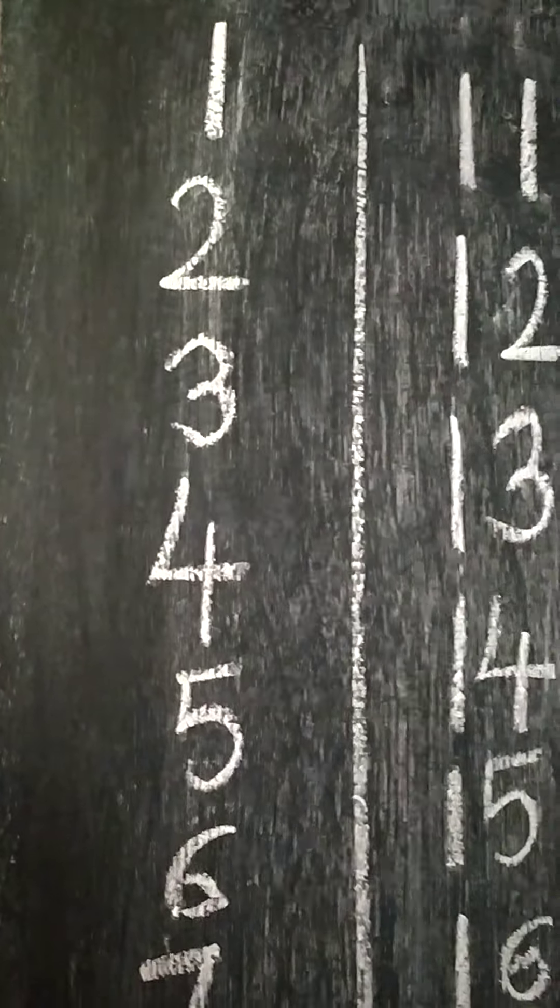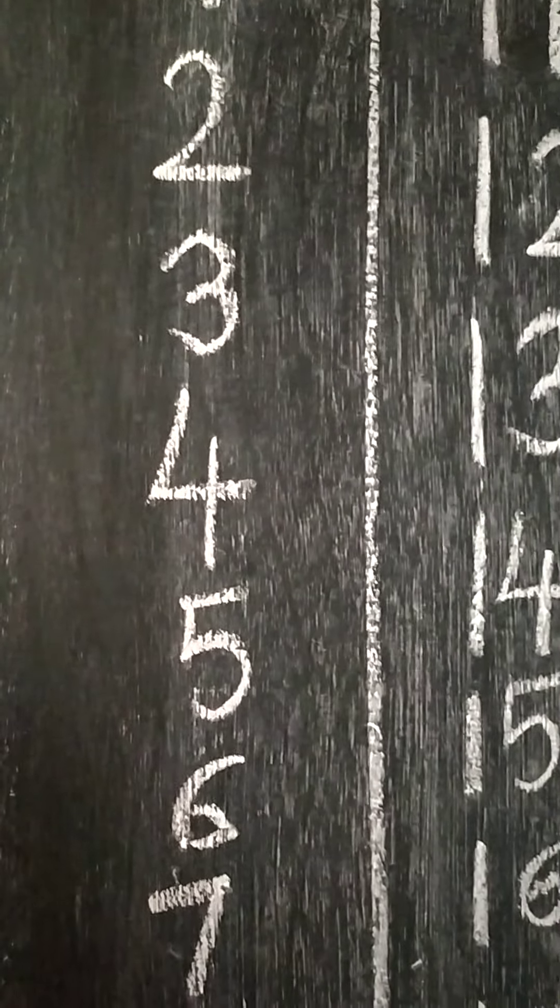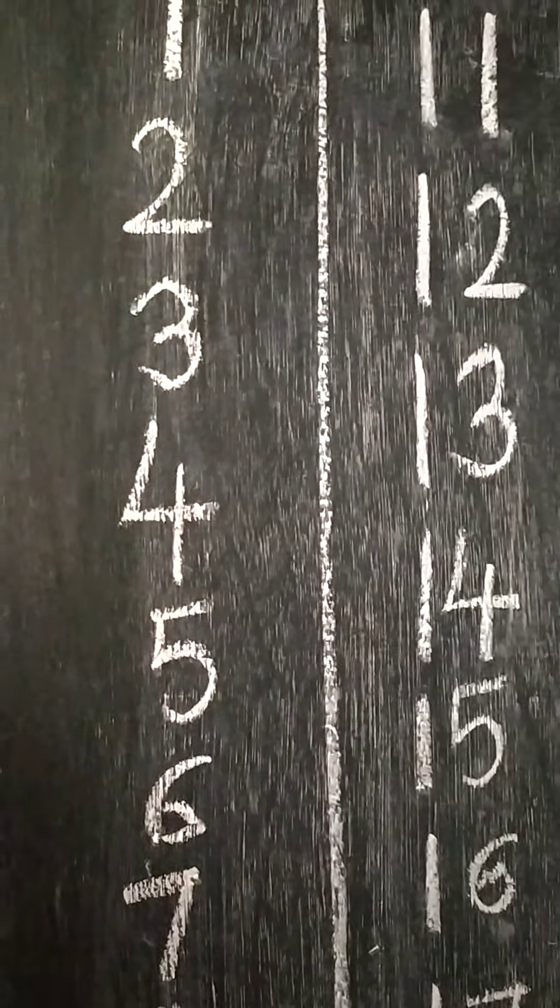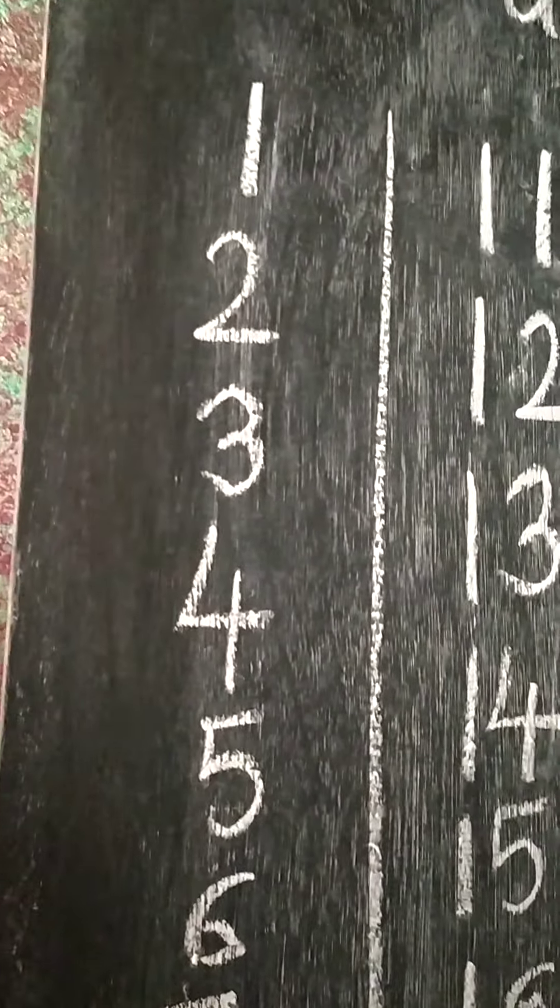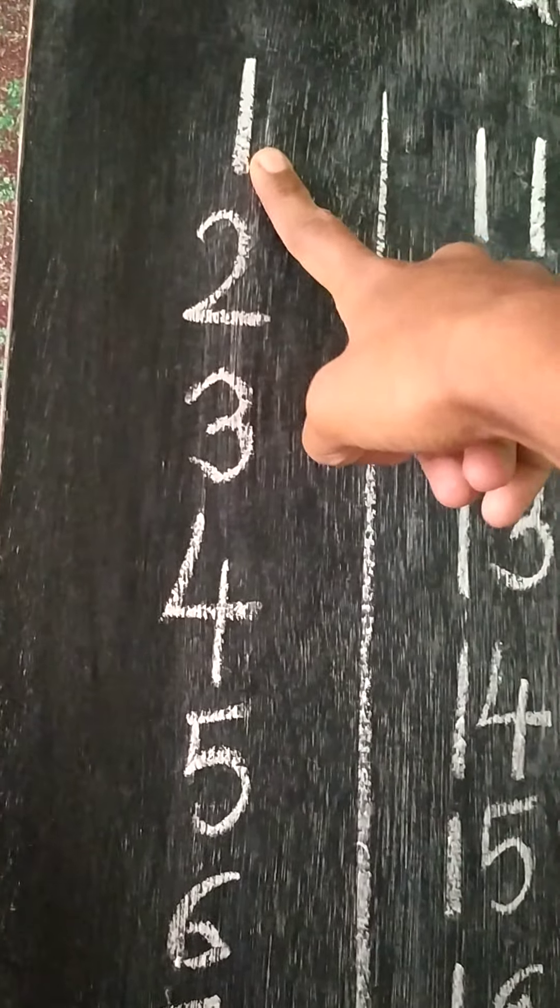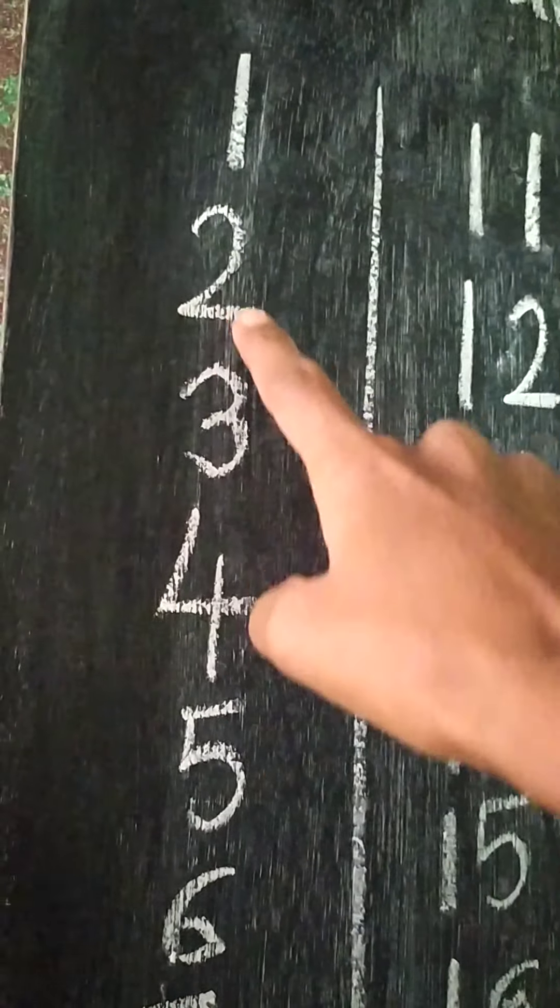First you repeat after me, 1 to 10 numbers. Afterwards we will start 11 to 20. Say one, two, three.